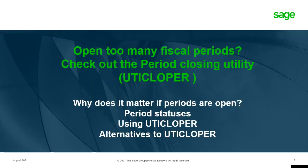So you've opened too many fiscal periods. We're going to check out the period closing utility, also known as UTICLOPER. The first question we're going to answer is why does it matter if periods are open anyway? We're going to look at period statuses, using the utility, and alternatives to the utility.